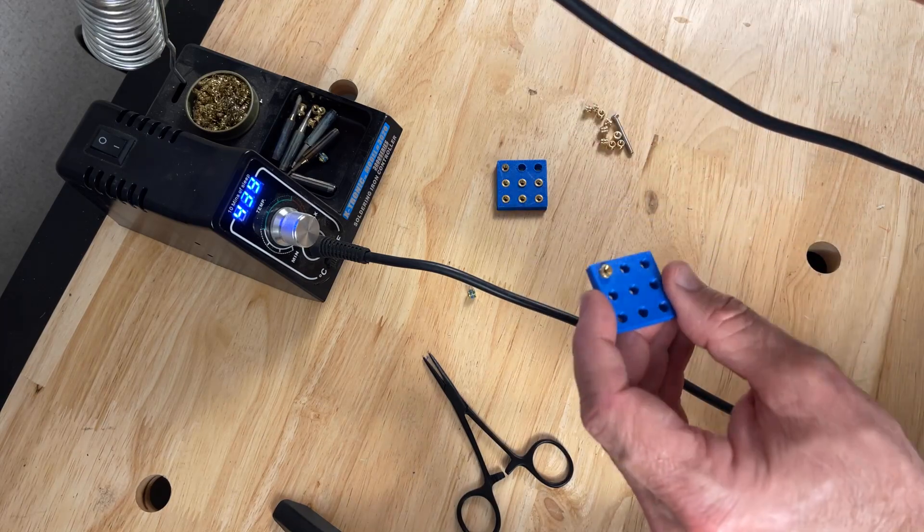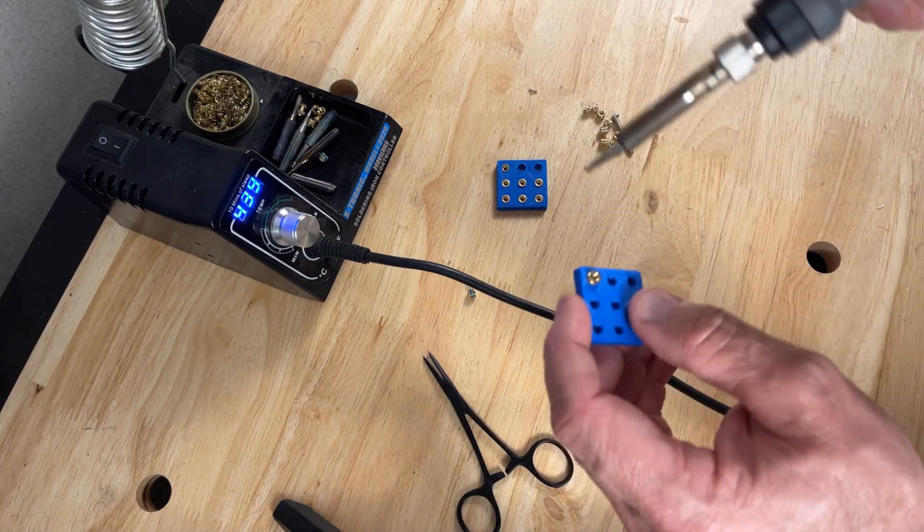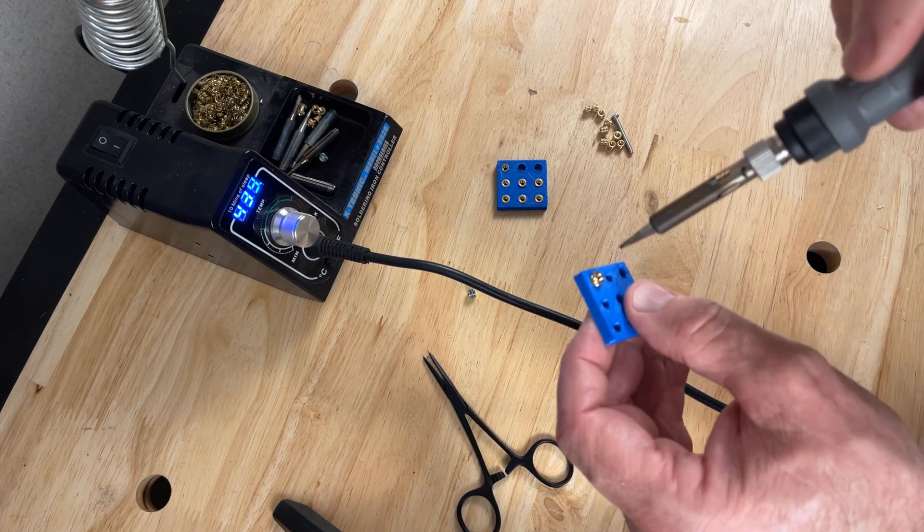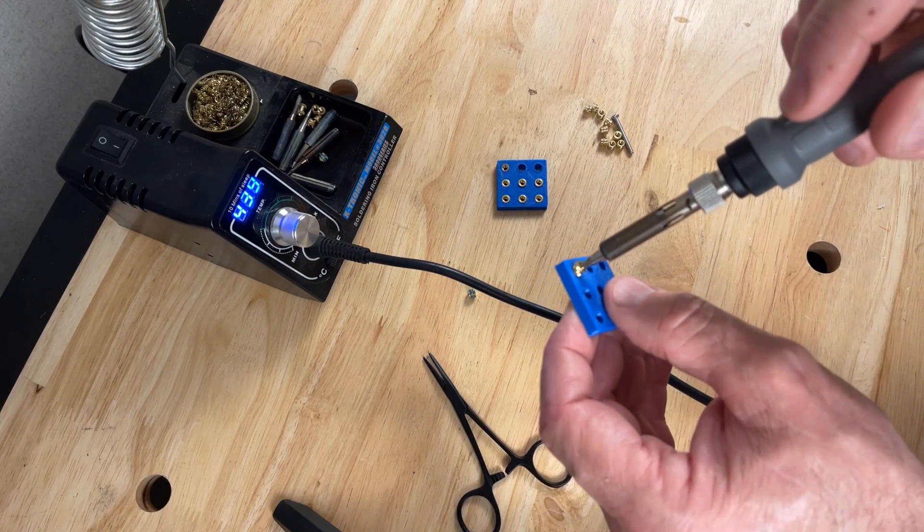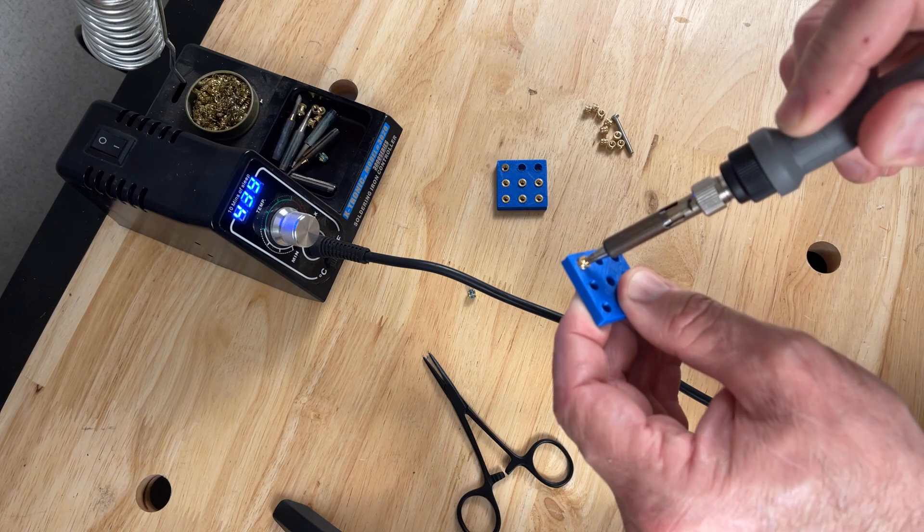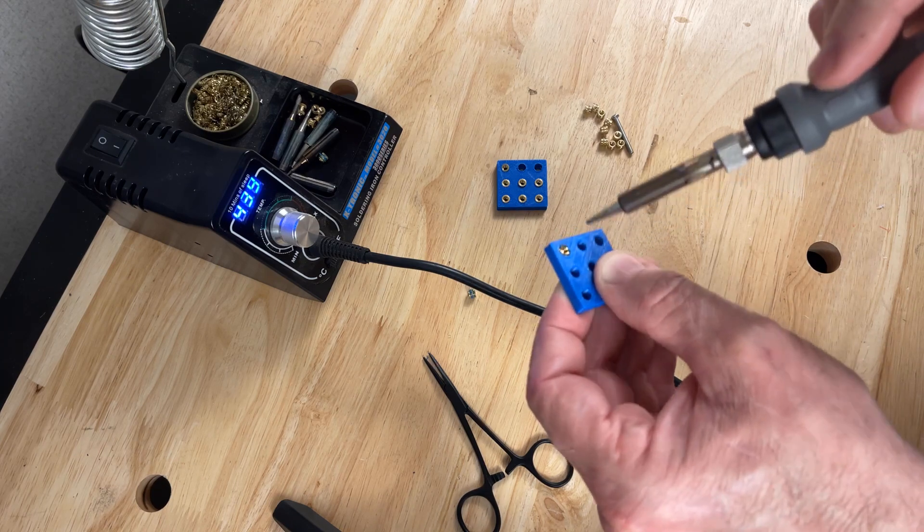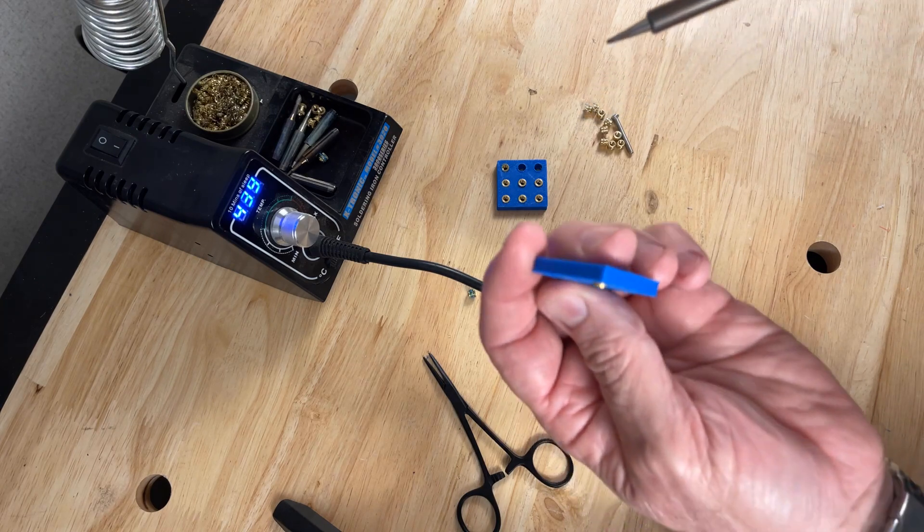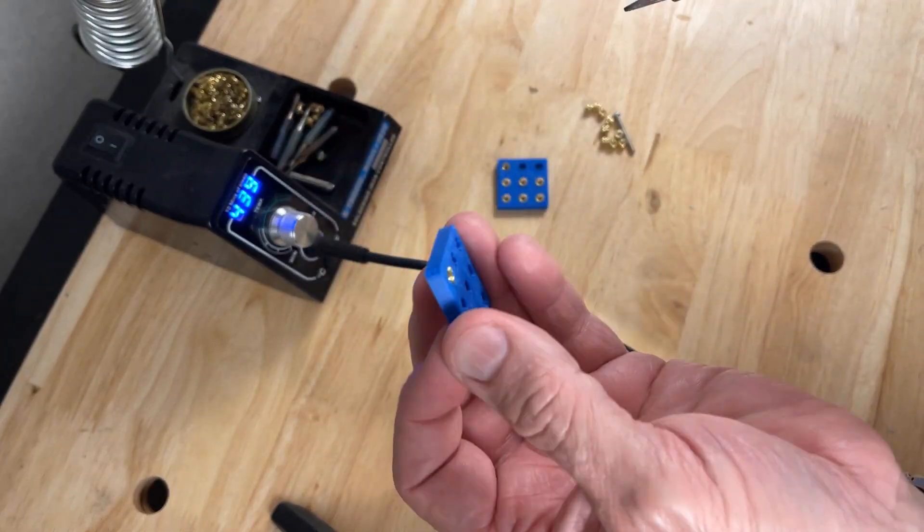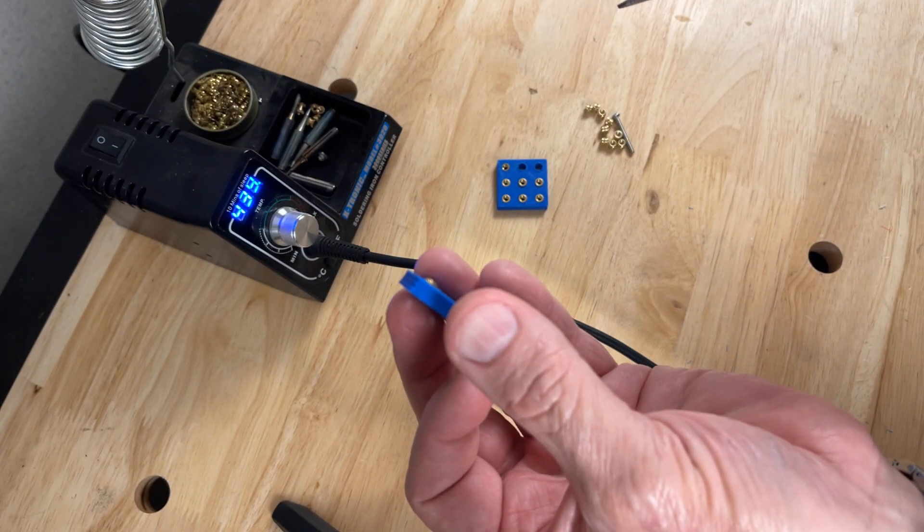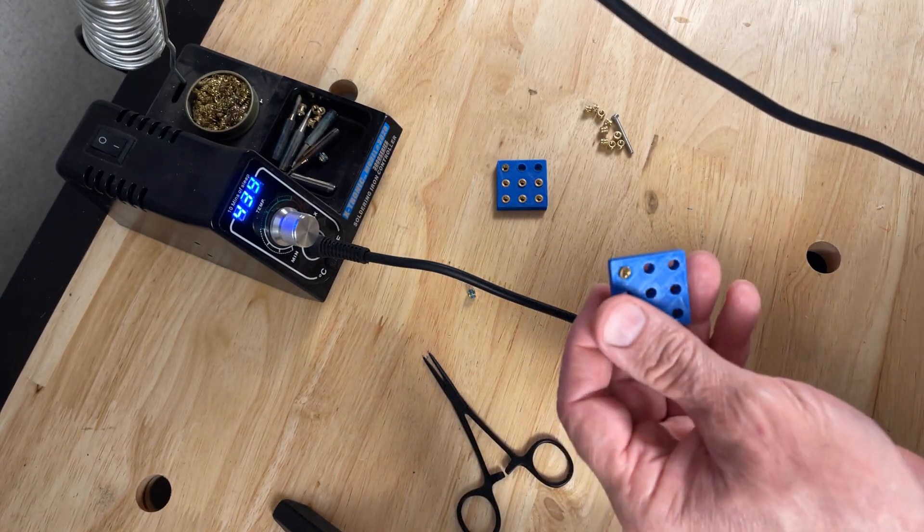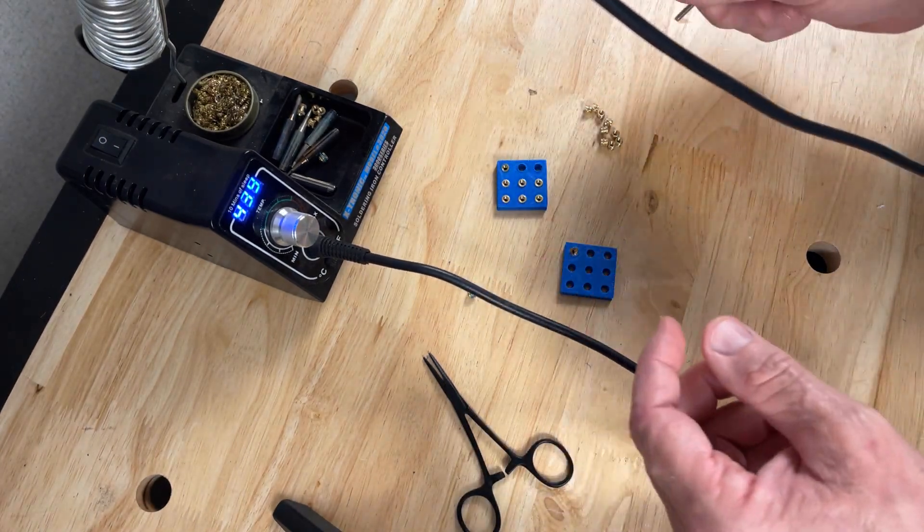Now I'm going to purposely set this one crooked and show you a method that I use to straighten them out. We're going to run it in there, and it's set crooked. If you look at that, it's in there crooked. Here's what I do to correct that.